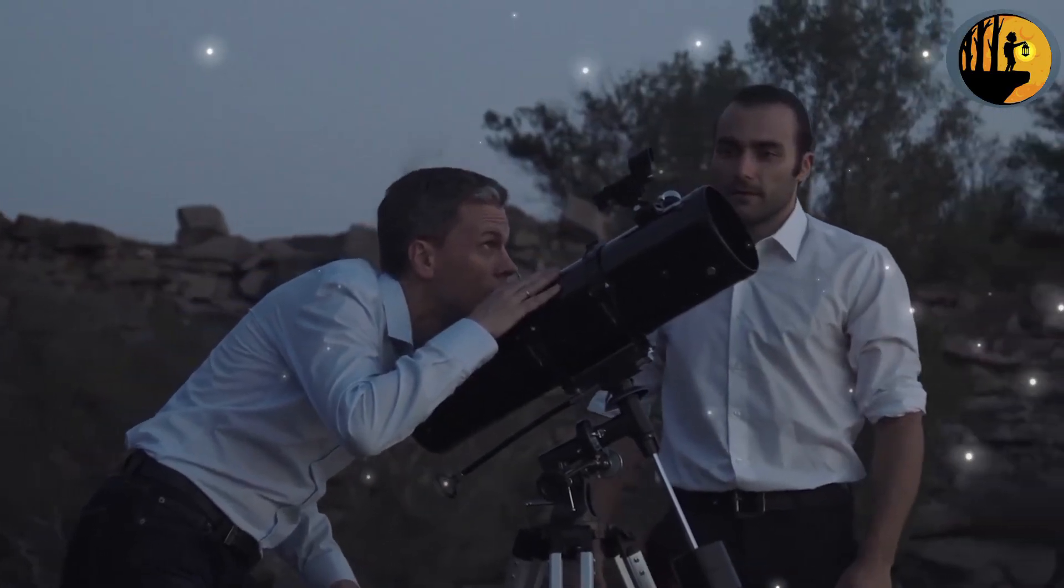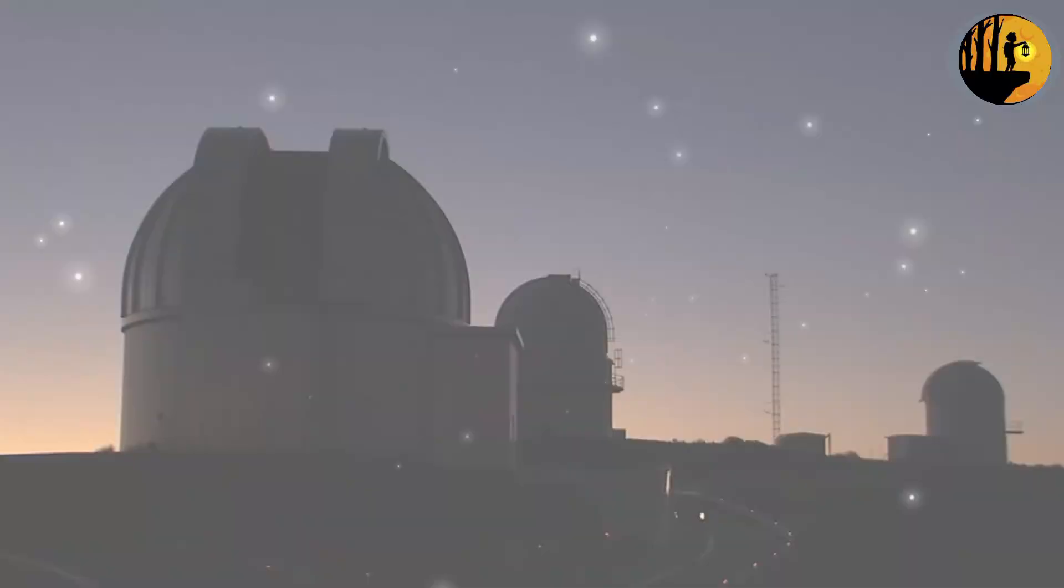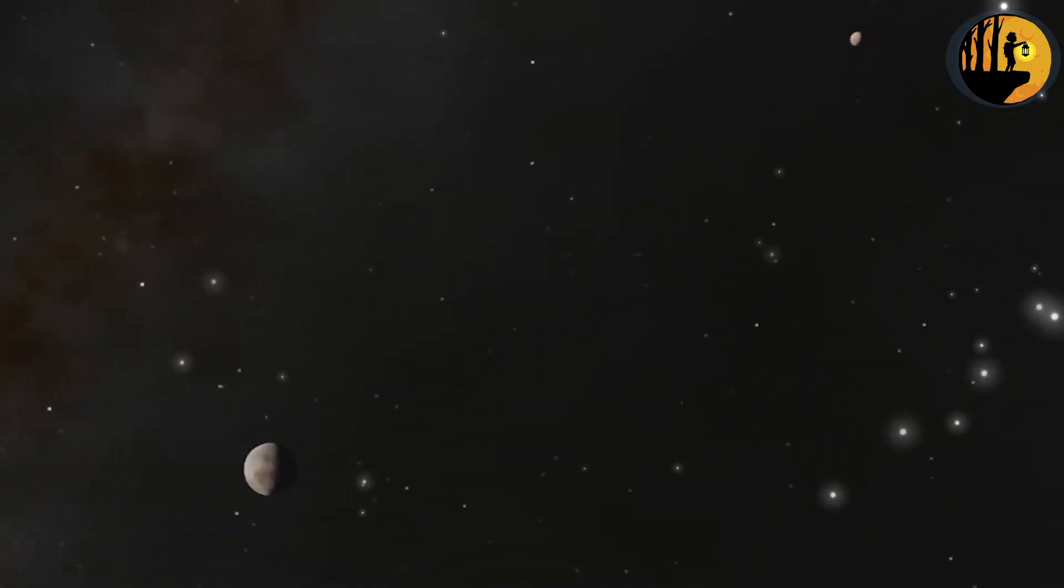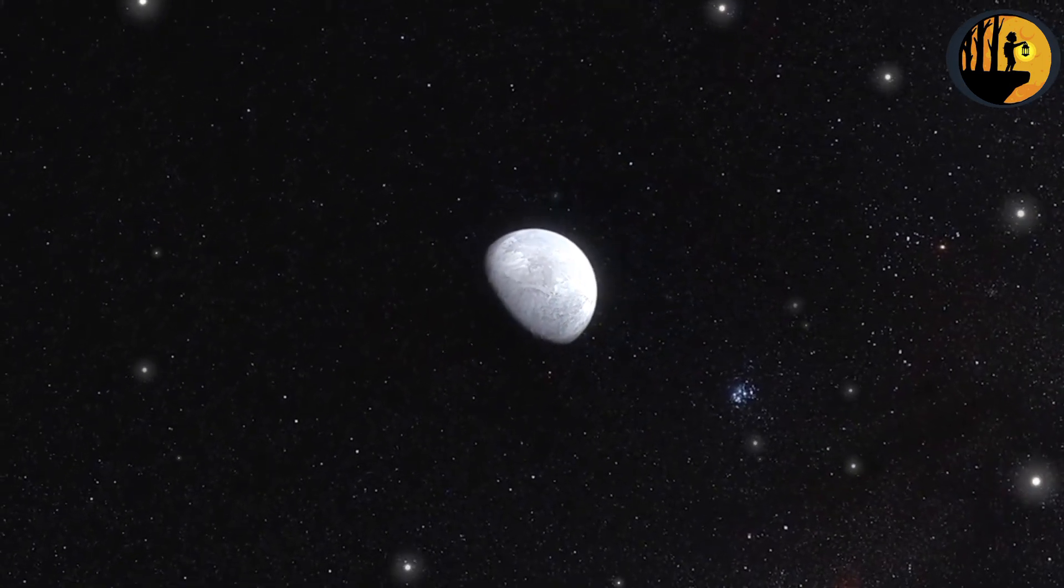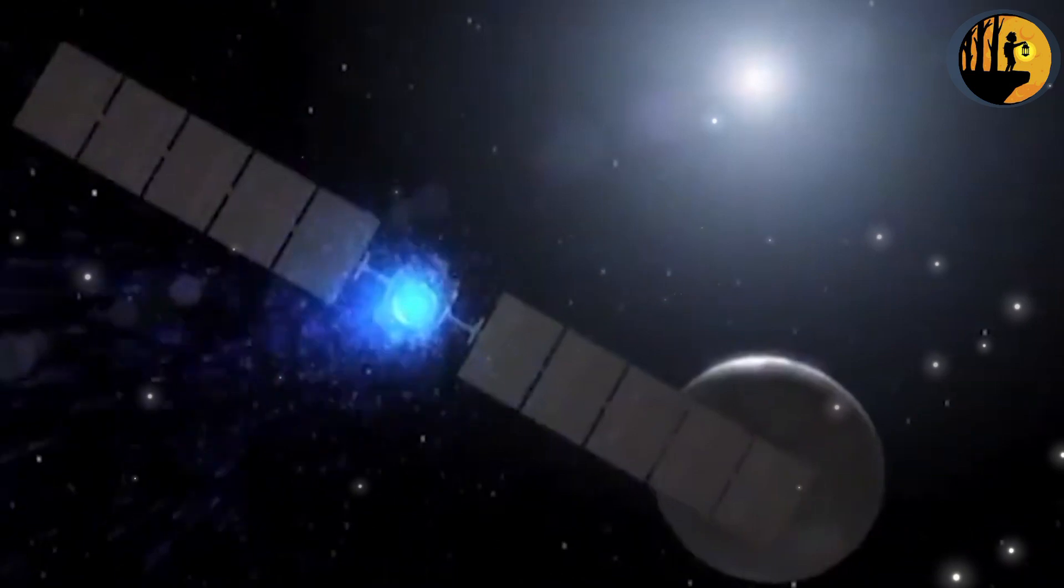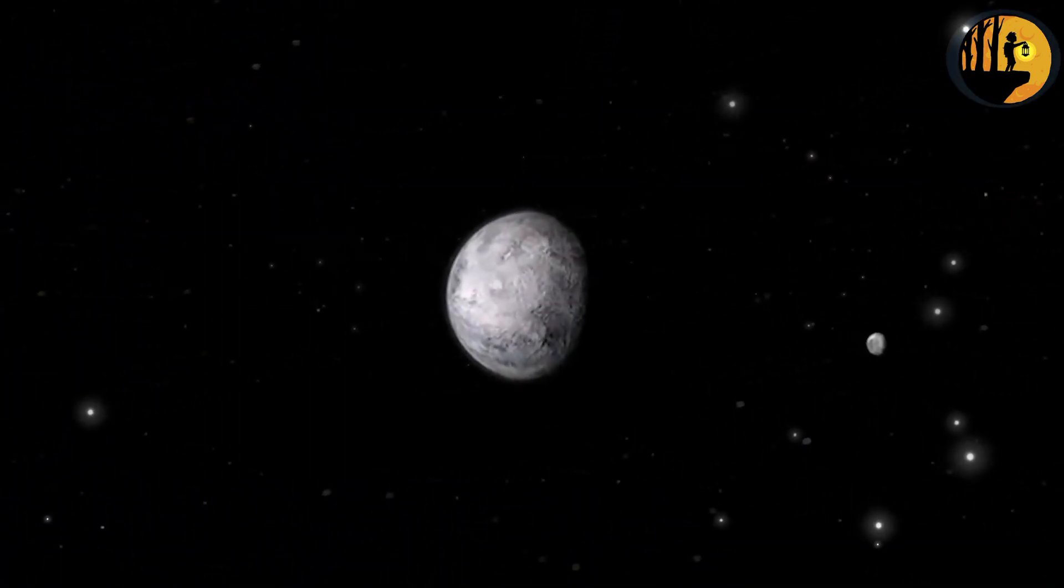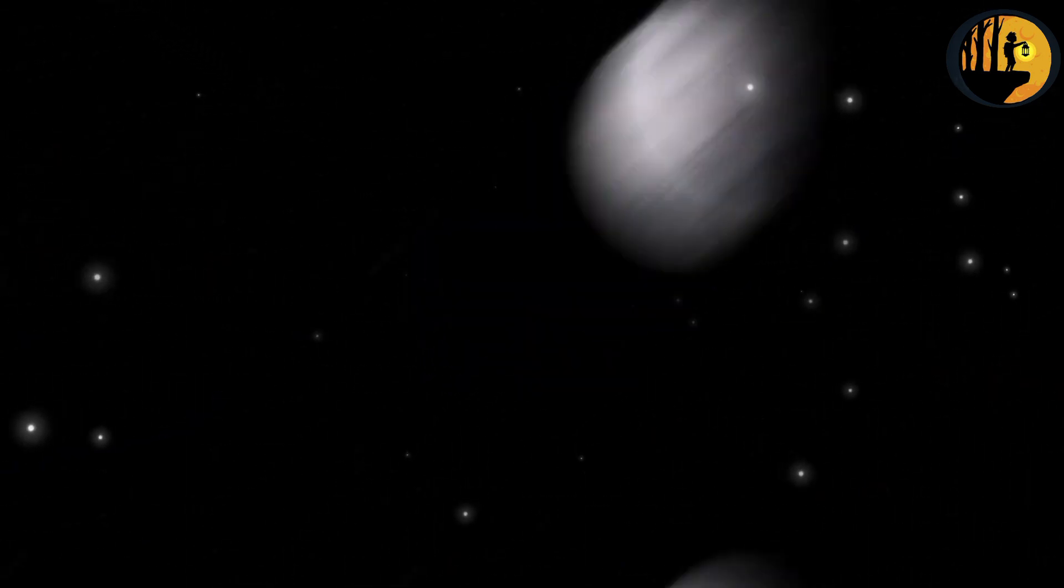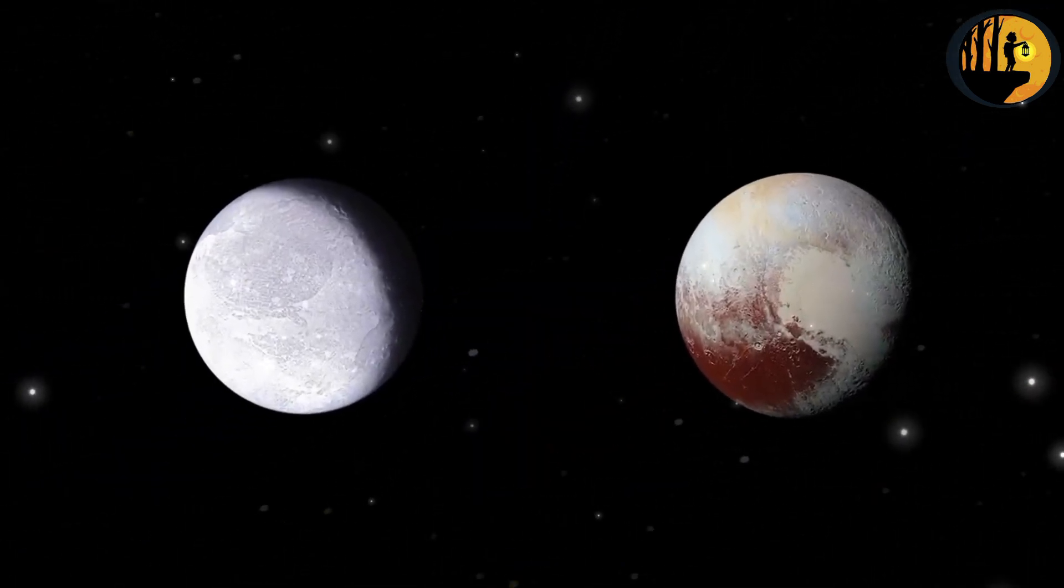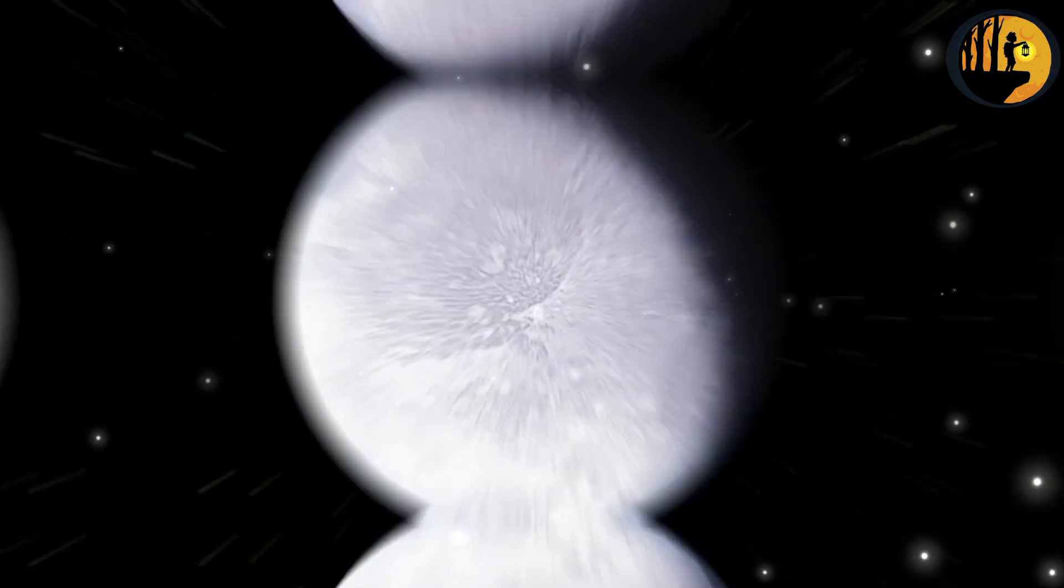According to this definition, a celestial body must fulfill three criteria to be considered a planet: it must orbit the sun, it must be spherical in shape due to its own gravity, and it must have cleared its orbit of other debris. Dwarf planets meet the first two criteria of orbiting the sun and having a spherical shape. However, they have not fully cleared their orbits of other objects, such as asteroids or smaller bodies.